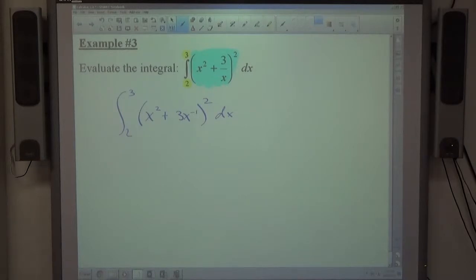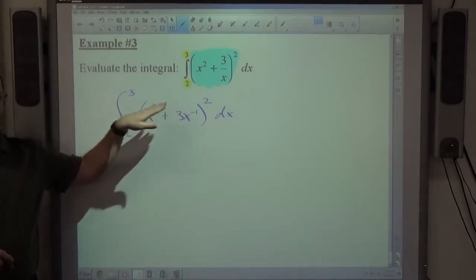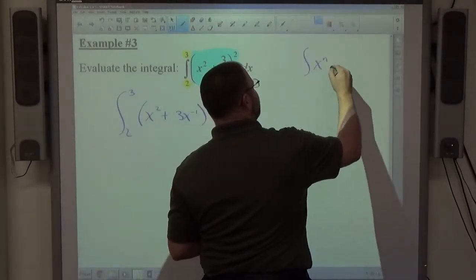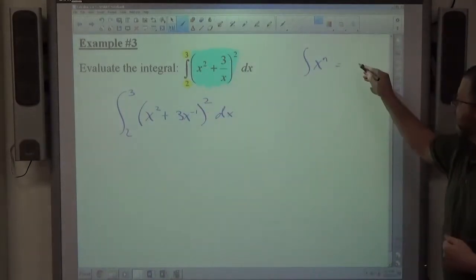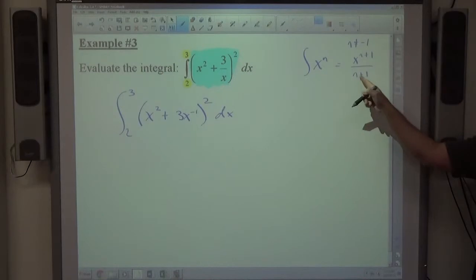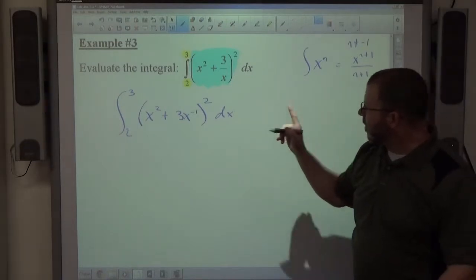And what you'll notice here is that we have that forbidden x to the negative 1 power. If we recall this rule that says we have x to the n, it's x to the n plus 1 over n plus 1, as long as n does not equal negative 1. Negative 1 is bad because negative 1 plus 1 is 0, creates division by 0. x to the 0 over 0, how do we deal with that?